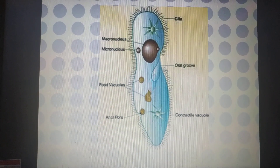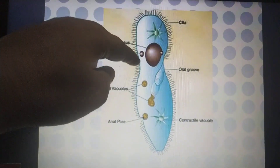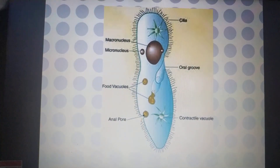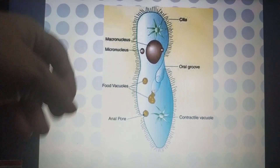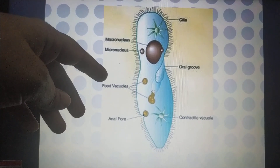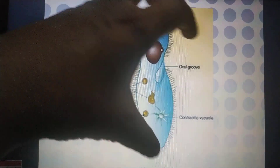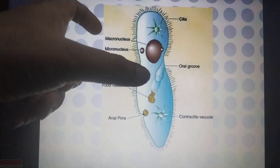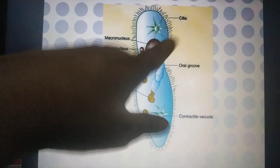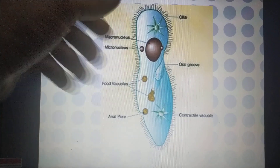Here is the diagram of paramecium showing the hair-like structures present outside the body, known as cilia. Paramecium is a freshwater organism. When prey comes in contact with paramecium, the cilia hold the food particles and throw them inside the body, so that food is taken up by the organism.